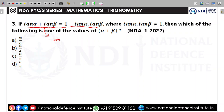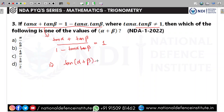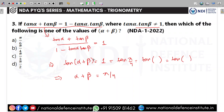Bringing the right-hand side to the denominator gives (tan α + tan β)/(1 − tan α·tan β) = 1. This is the familiar expression tan(α + β) = 1, which equals tan(π/4), implying α + β = π/4. Just to remind you, it is not the only angle giving 1, but among the options, π/4 fits. Therefore α + β = π/4.